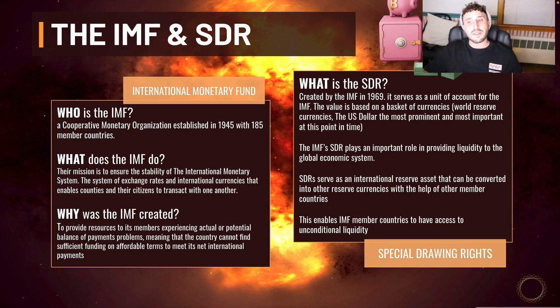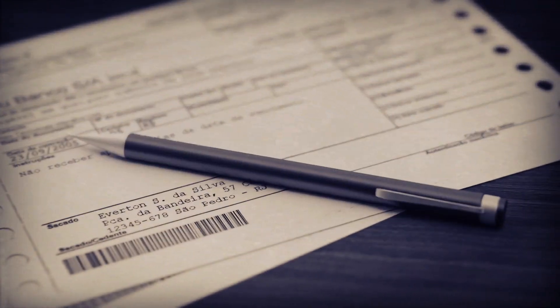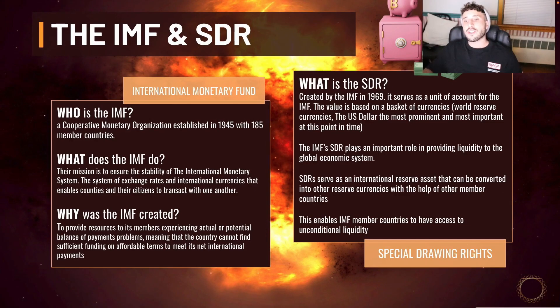The IMF's core responsibility is to provide resources to its members experiencing actual or potential balance of payments problems. So they can't pay their debts — they have too much debt compared to how much money they have, meaning the country cannot find sufficient funding on affordable terms to meet its net international payments.